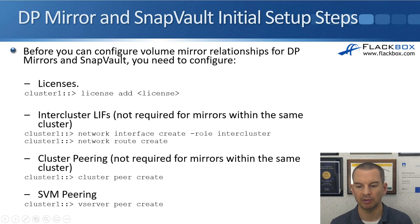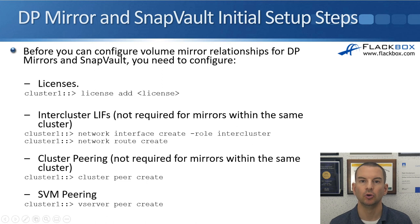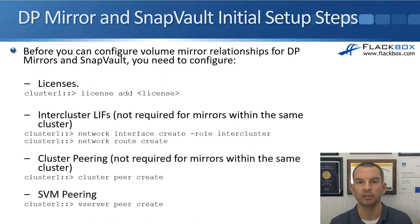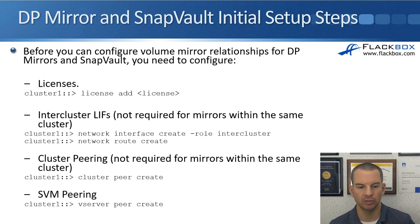Now, if you are replicating within the same cluster, you don't need inter-cluster LIFs. But by far more commonly, when you're using SnapMirror and SnapVault, it is going to be between different clusters. So you use the 'network interface create' command to create the LIFs.